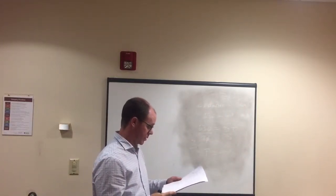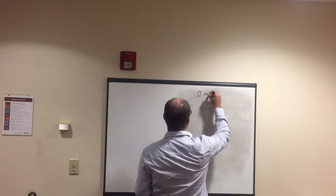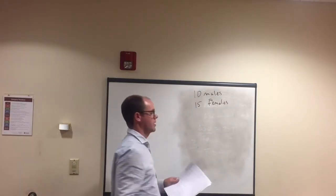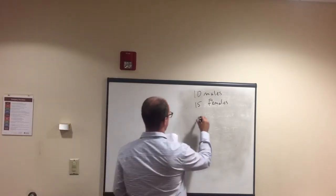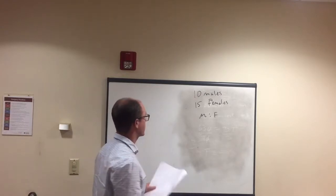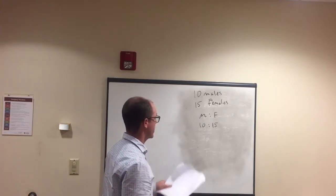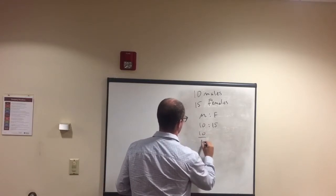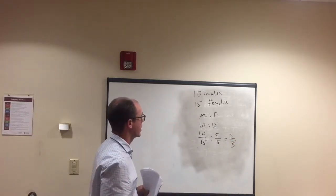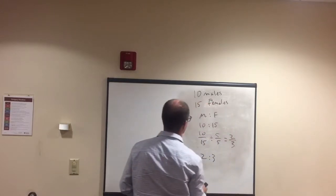Now let's look at proportions. In a classroom there are 10 males and 15 females. What is the proportion of males to females? They'll want you to reduce it — 10 over 15, divide top and bottom by five, and you get two out of three. So males to females is two to three.